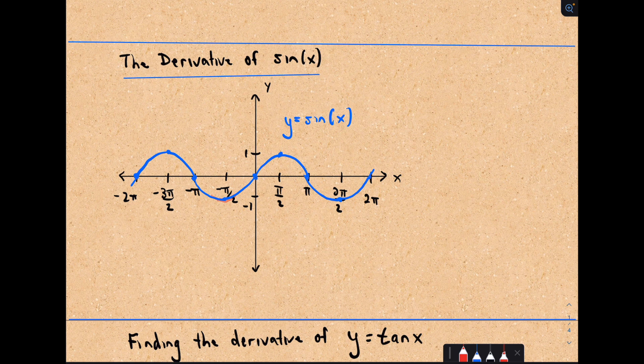So that means on the derivative graph, at those corresponding x-coordinates, the y-coordinate should be zero—because at the original x-coordinate of negative 3π/2, the slope of the tangent line is zero. Likewise at negative π/2, positive π/2, 3π/2, and you can keep going.